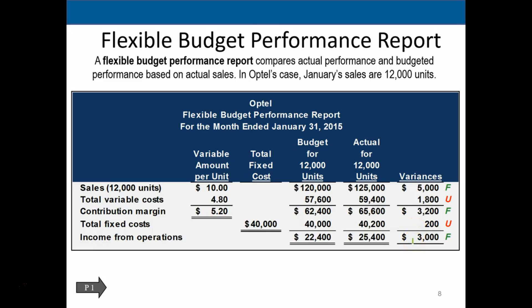We can drill down into the variance numbers and ask: why is that one different? Should we make an adjustment for the future? Is that a significant number or is it immaterial? We might look at favorable differences too — any substantial difference, whether favorable or unfavorable, warrants investigation. If something is too favorable, maybe we're not doing the correct calculations and we should be shooting for a better outcome.